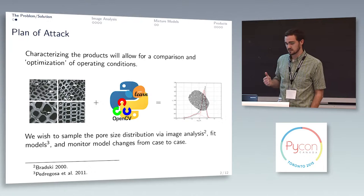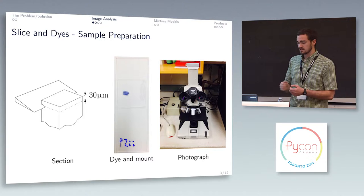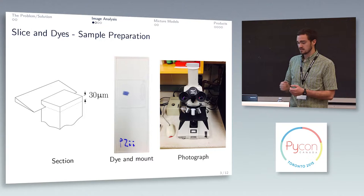I want to sample the pore size distribution, do some image analysis and then fit some models and see results. Sample preparation is we've compressed these wood chips or just raw wood, take a really thin slice with a sharp razor blade, put it on a microscope slide and then take a picture of it and what you get out is something that looks like this.